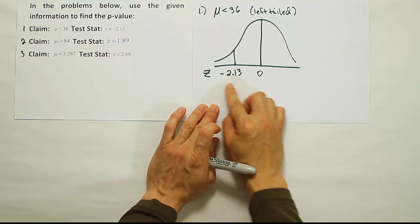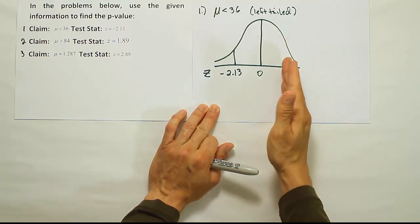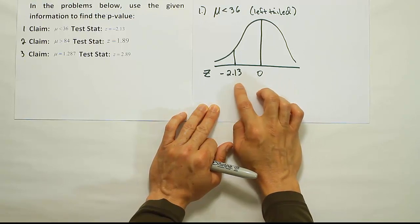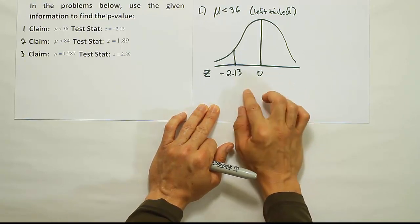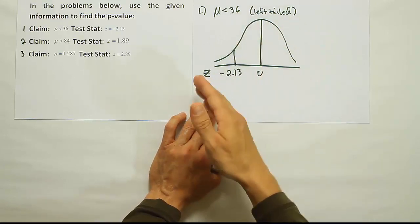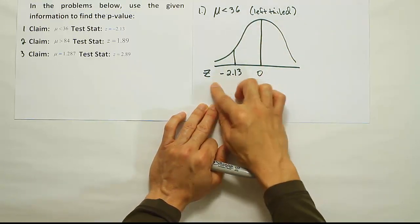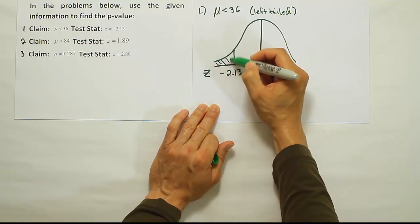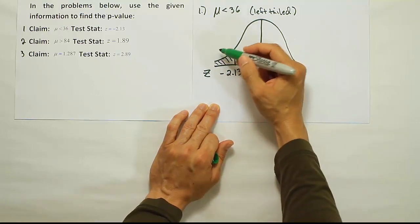Note, even if the test stat was on this side of the curve, we still find the area to the left of the test statistic. It doesn't matter which side the test stat is on - it could be on the left side or the right side. For a left-tailed test, we find the area to the left of the test statistic. So in this case, we're finding the area to the left of minus 2.13. If we can get that area, that's our p-value.